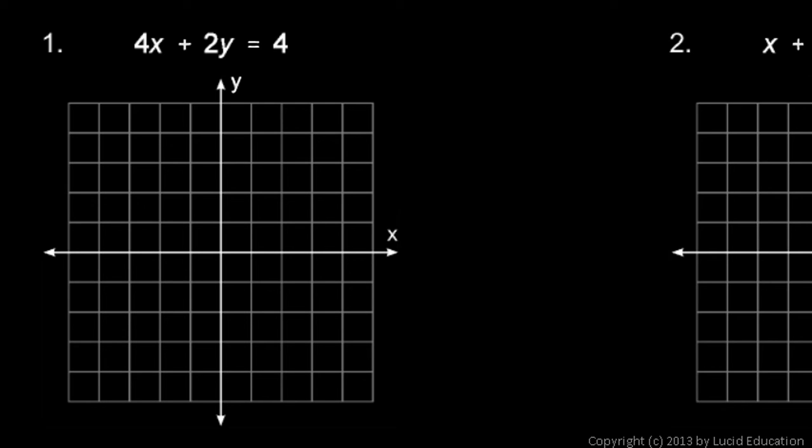So in example number one here, I'm going to start by letting x equals zero. And you can see that if x equals zero, we're left with 2y equals 4, so y has to be 2.